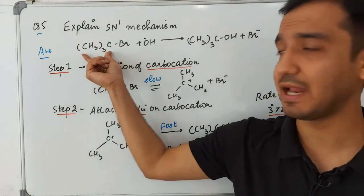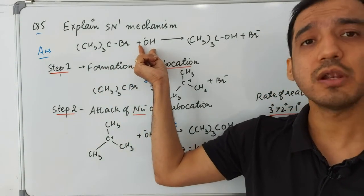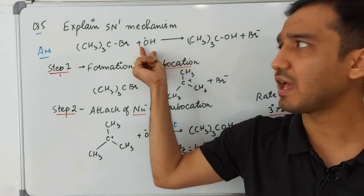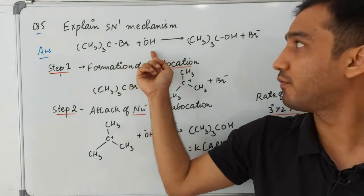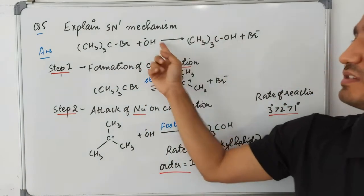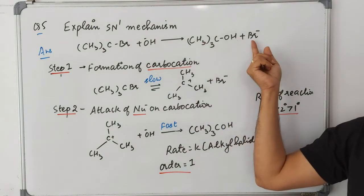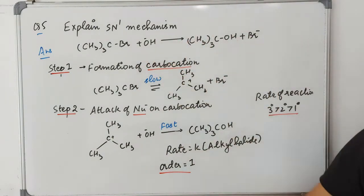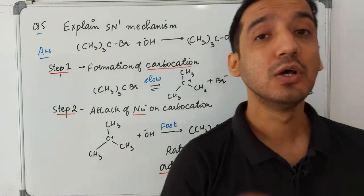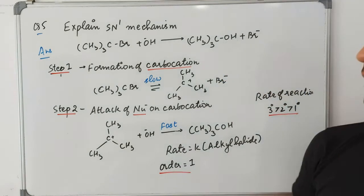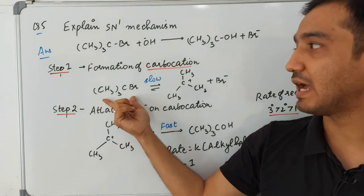Question five is: explain the SN1 mechanism. In SN1, suppose you have a tertiary alkyl halide reacting with OH (nucleophile). The bromine is removed and OH gets attached, giving a tertiary alcohol plus Br⁻. This reaction happens in two steps.